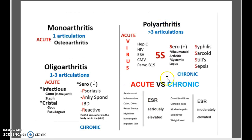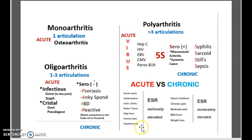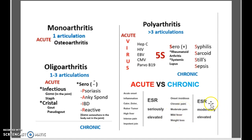You have to understand the difference between acute and chronic. When it is acute, it is onset inflammation, described by the Latin terms calor, dolor, rubor, and tumor. There is generally high fever, intense pain, and impotent joints. The ESR is actually really elevated. When it is chronic, it is onset insidious — so it is very silent. There is chronic pain, moderate pain, mild fever, and a lot of weight loss. Again, the ESR is elevated, but more moderate.